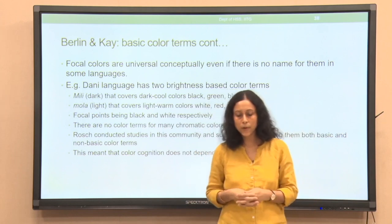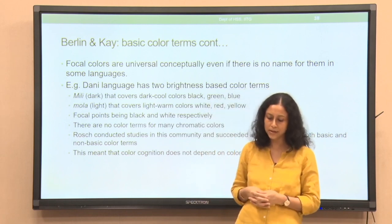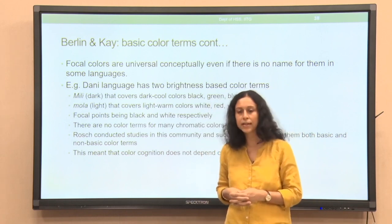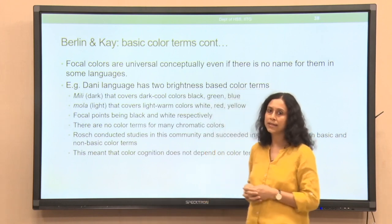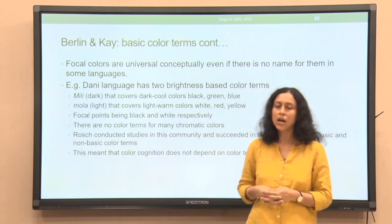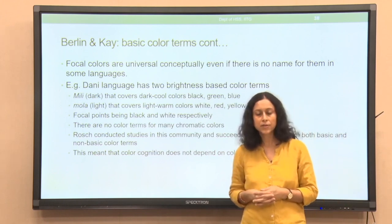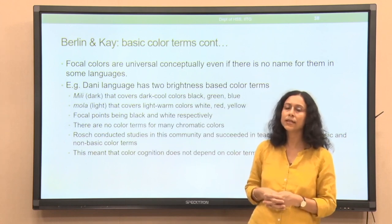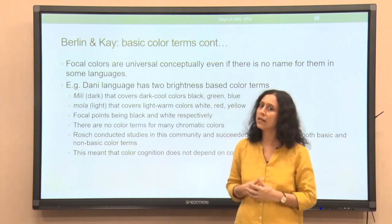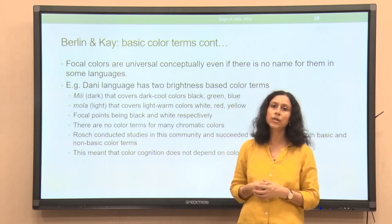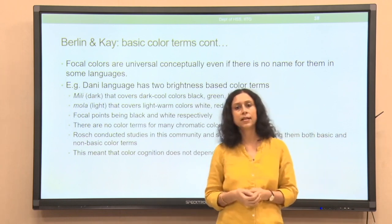We have talked about conceptual categorization as a process and what is the outcome of those processes. We have also seen various theories of categorization — through the classical theory, then the prototype theory and the exemplar theory, with the help of color terms. We have seen that languages in the world differ in terms of the number of basic color terms they have, ranging from 2 to 11.